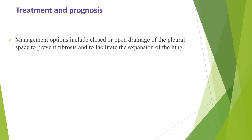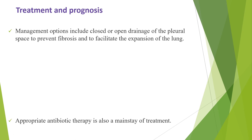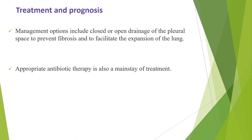Treatment of empyrema necessitans includes closed or open drainage of the pleural space to prevent fibrosis and to facilitate expansion of the lung. Appropriate antibiotic therapy is also a mainstay of treatment. If tuberculosis is the cause, appropriate anti-TB drugs should be given.